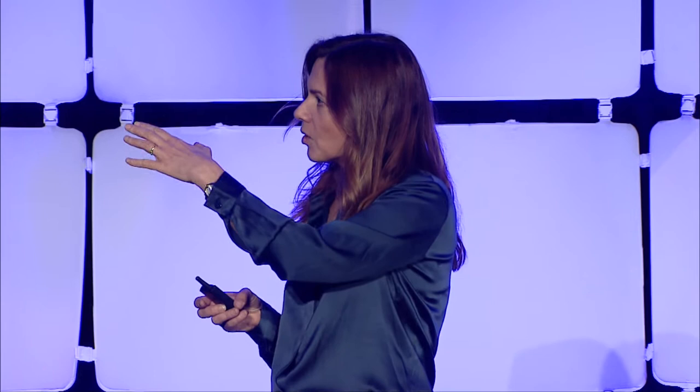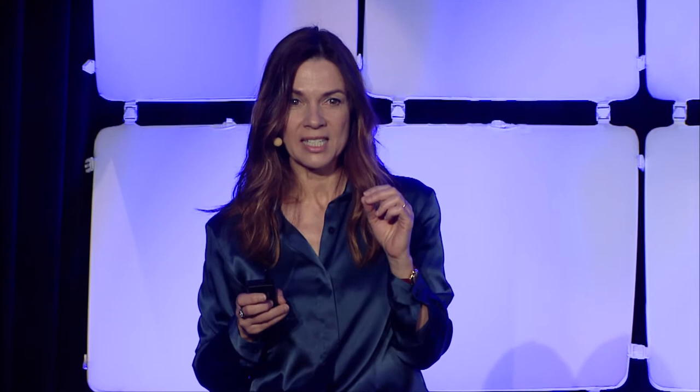I would like to start with this painting of Klimt, which is one of my favorite paintings. It shows the secret of the very beginning of the life of all of us. It shows on the left the golden sperm of Zeus showering over Danae's eggs, shown on the right bottom corner, making them develop on this blanket into a blastocyst-like structure. Klimt already knew, more than 100 years ago, how a blastocyst-stage embryo looks. This is the first seven days of our life.